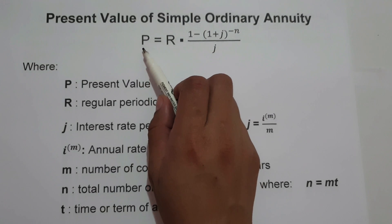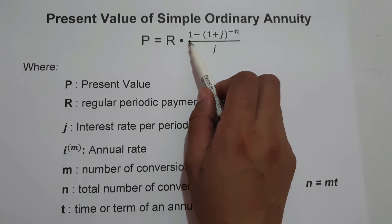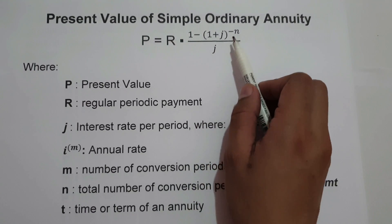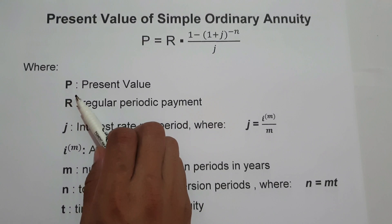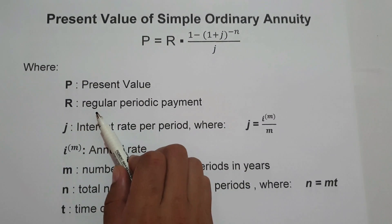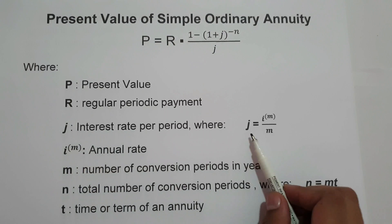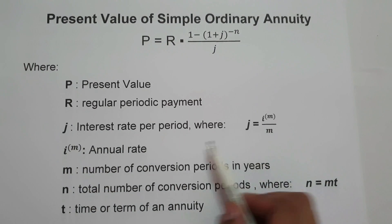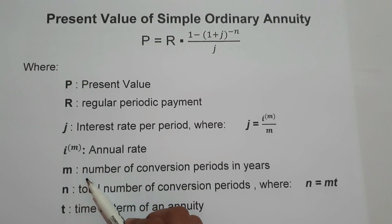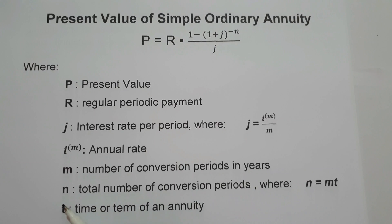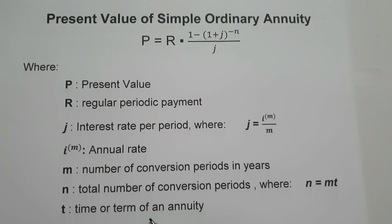To find the present value of a simple ordinary annuity, we use the formula P equals R multiplied by 1 minus the quantity of 1 plus J raised to negative N, all over J. Where P is the present value, R is the regular periodic payment, J is the interest rate per period found using I^M over M, where I^M is the annual rate and M is the number of conversion periods in a year. N is the total number of conversion periods, found by multiplying M times T, where T is the time or term of the annuity.